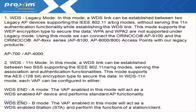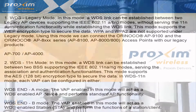In WDS 802.11N mode, each VAP can be configured as either WDS Endpoint A — where the VAP acts as a WDS-enabled AP device and performs standard AP functionality — or WDS Endpoint B mode, where the VAP acts as a WDS-enabled station and performs the functions of a station or client.